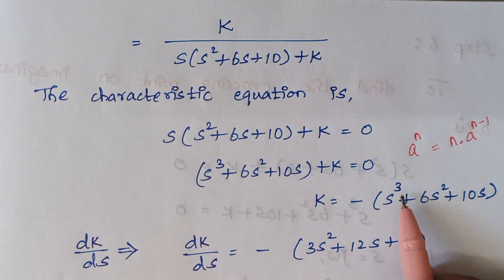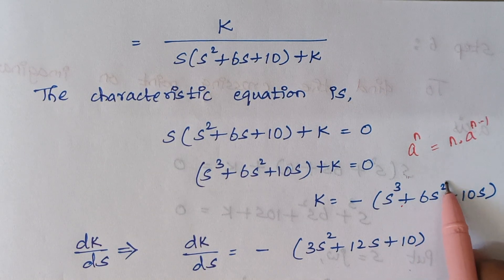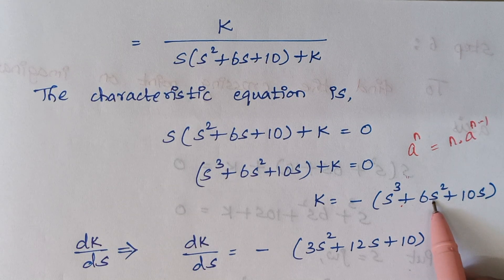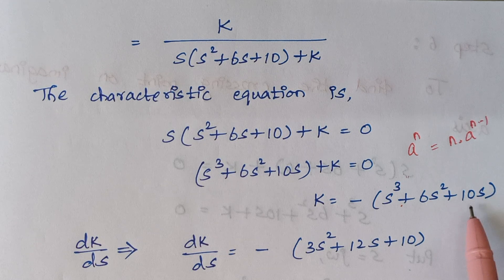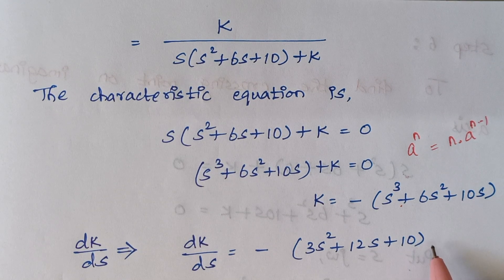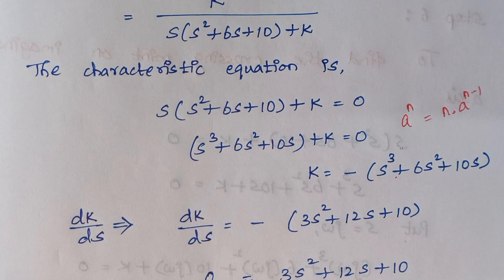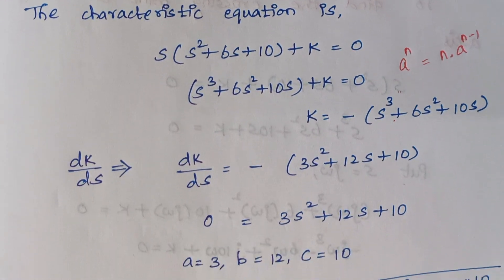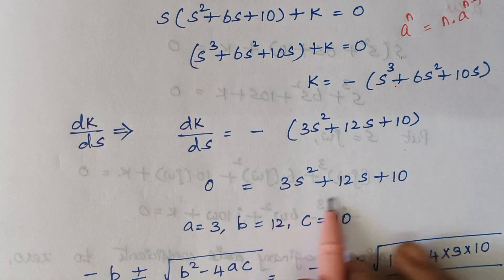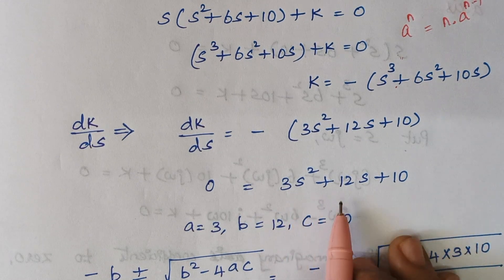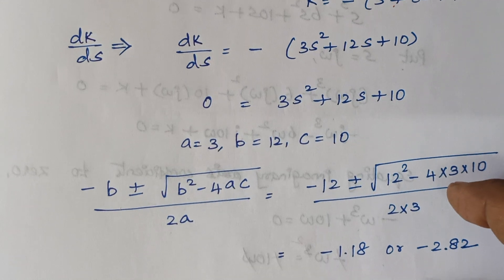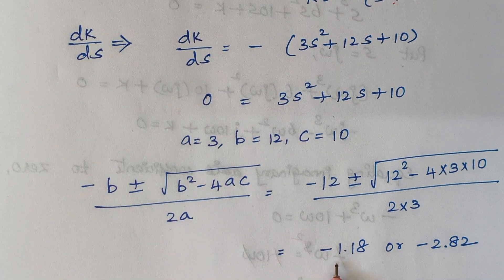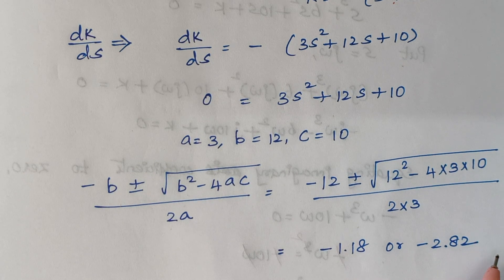Using the basic differentiation formula — n into a to the power n minus 1 — we differentiate the expression. S cubed becomes 3S squared; S squared becomes 2S, so 6 times 2 gives 12S; and differentiating 10S gives 10. So we get a quadratic equation 3S² + 12S + 10 = 0. Solving this with A=3, B=12, C=10 using the quadratic formula gives roots of minus 1.18 and minus 2.82.